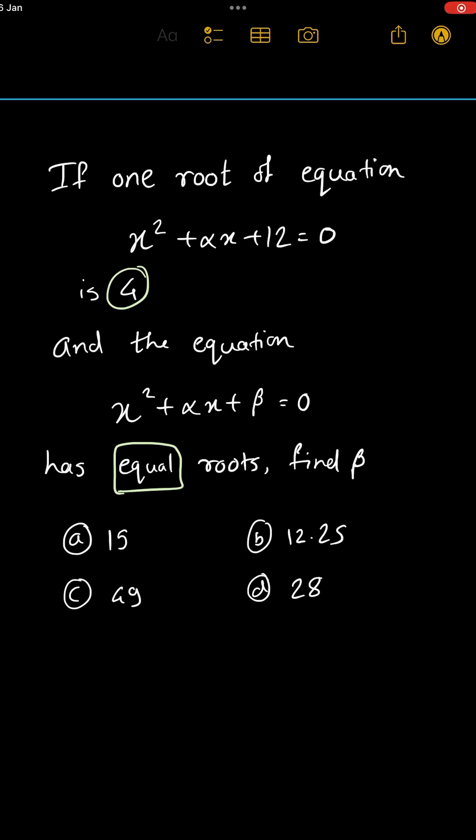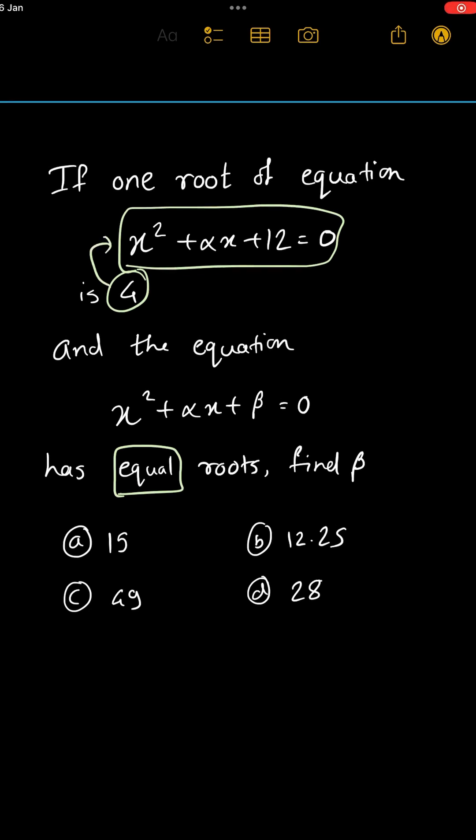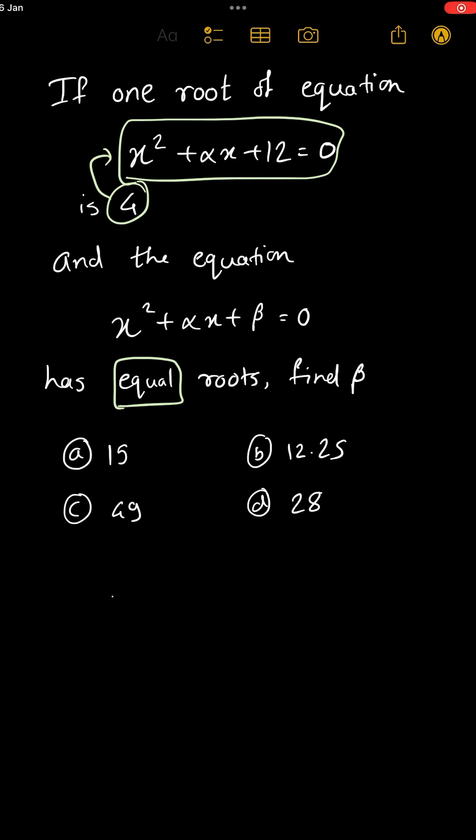This question looks complicated but it is fairly easy. First they have given one root of this equation. What is root? Root means answer. So if we put x as 4, then this equation should give the correct result. Let's put x as 4.